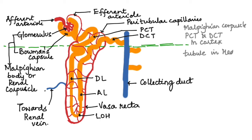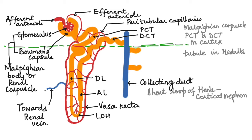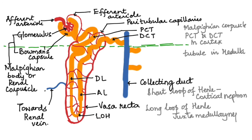The tubular part is located in the medulla region. The loop of Henle in some nephrons is short and does not extend to the entire medulla — these are called cortical nephrons. The other type, which has a very long loop of Henle extending deep into the medulla, is called juxtamedullary nephrons. The Vasa recta in juxtamedullary nephrons are much denser compared to those in cortical nephrons. So this was the structure of the nephron.